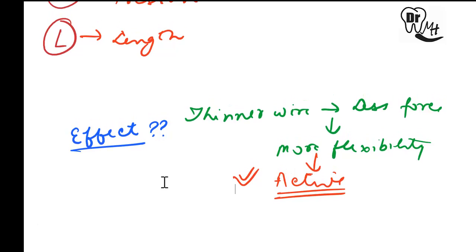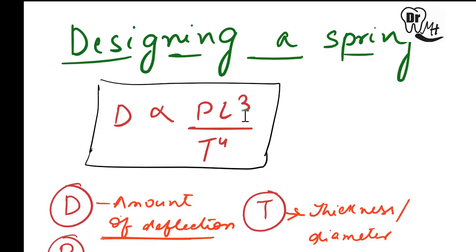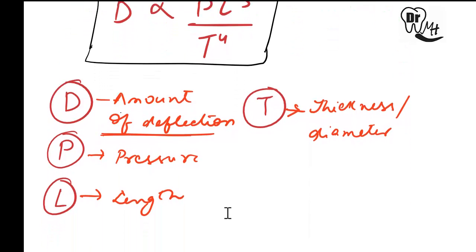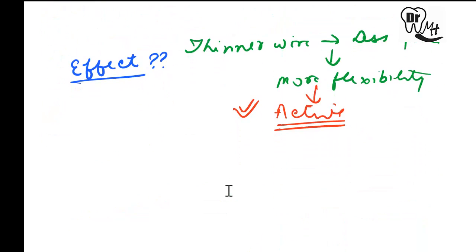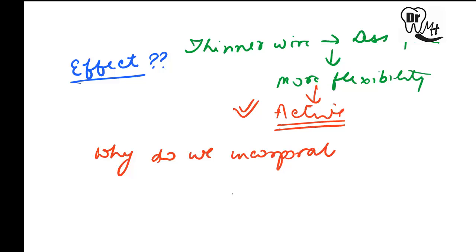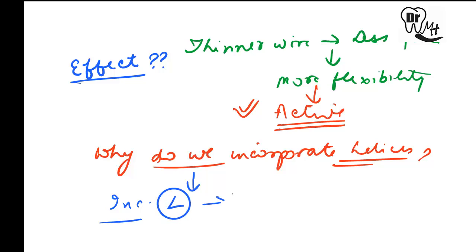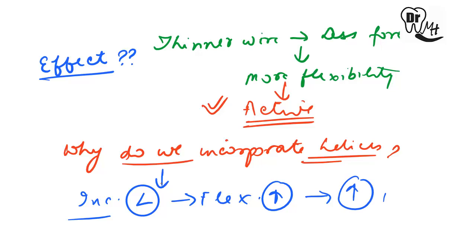The second factor is the length of the wire. If we double the length of the wire, we increase the flexibility of the spring by eight times. Increasing the length of the wire increases the range of action. This gives us the answer to why we incorporate helices — the helix increases the length of the wire, and when length is increased, flexibility increases, which increases the range of action.